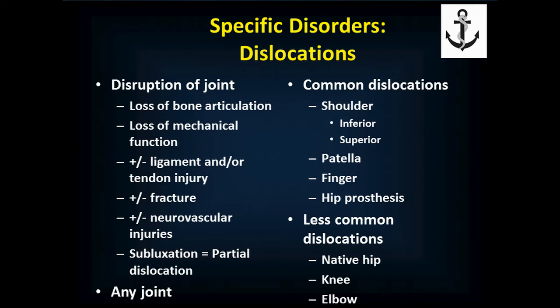This can happen with any joint, although some are more prone than others. In particular, the shoulder dislocates and can either pop out down or up. The patella or kneecap, the finger, and hip prostheses or artificial hips are notorious. The cups and balls are often made by different manufacturers, have a wide range of tolerances, and depending on how they're put in, sometimes these things just pop out repeatedly. Less common are native hip dislocations — somebody's own hip that hasn't been replaced. They can be dislocated, but typically associated with a fracture because it's an incredibly stable joint. You usually have to break part of the acetabulum — the part of the pelvis where the ball goes — so that ball slides out of the socket.